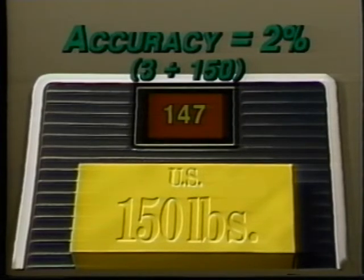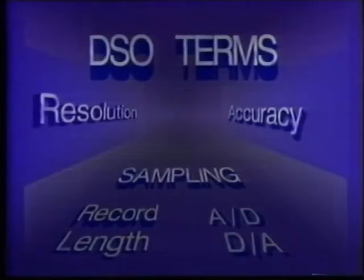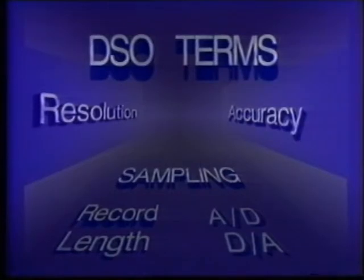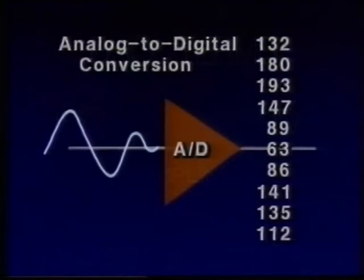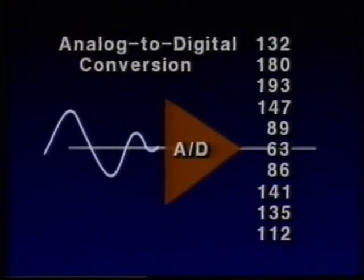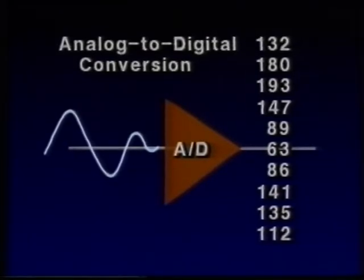If we place an official 150-pound weight from the National Bureau of Standards on the scale, the readout says 147 pounds, which tells us that the scale's accuracy in this range is 2% — three divided by 150 pounds. Both resolution and accuracy are critical in a measurement instrument, whether it's a scale or a scope. How close the DSO's A-to-D converter output matches the input signal's actual analog value is affected both by the A-to-D converter resolution and by the quantizing process.